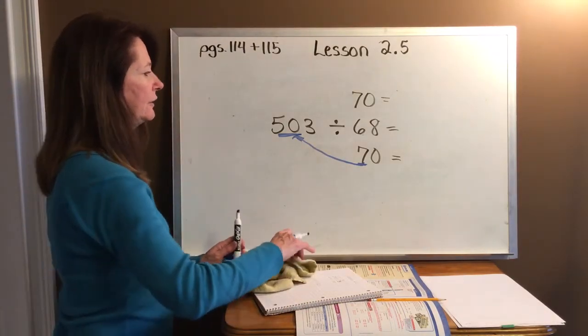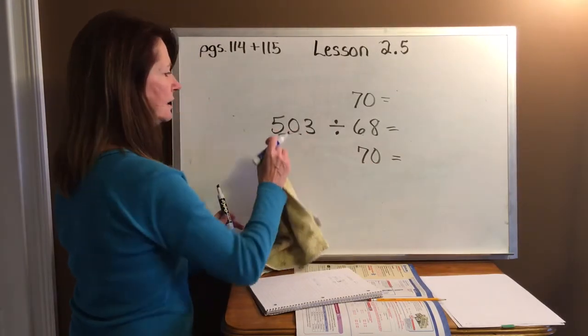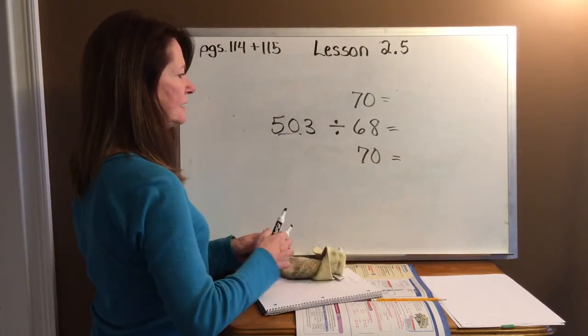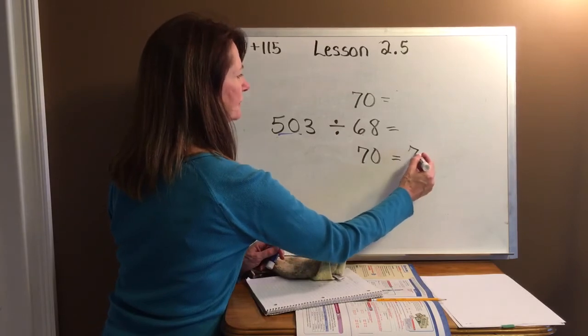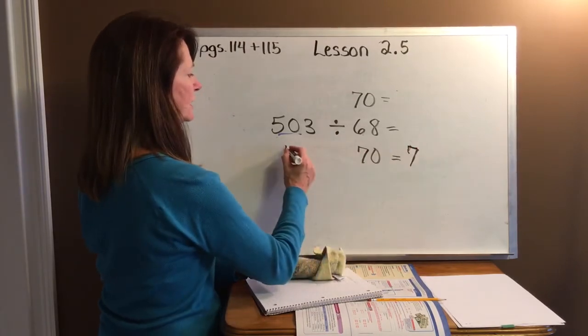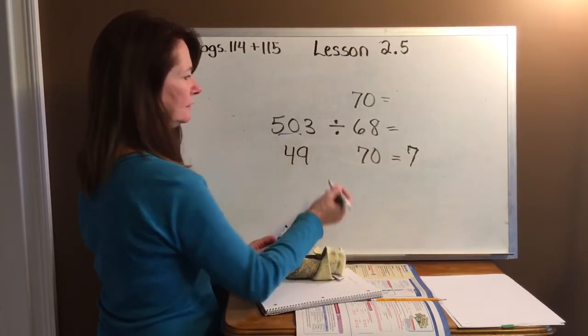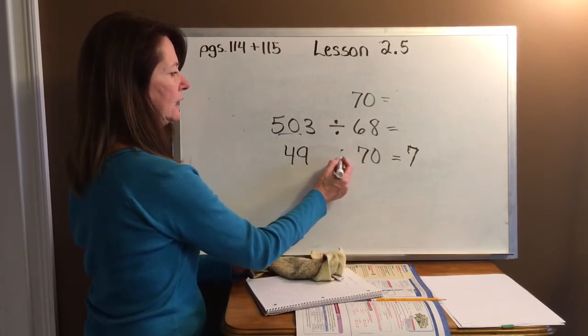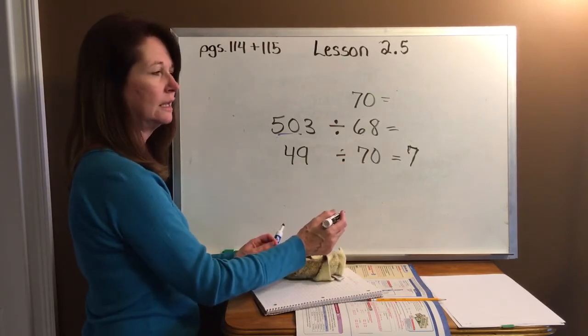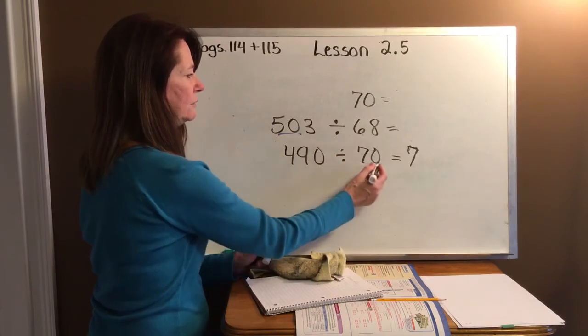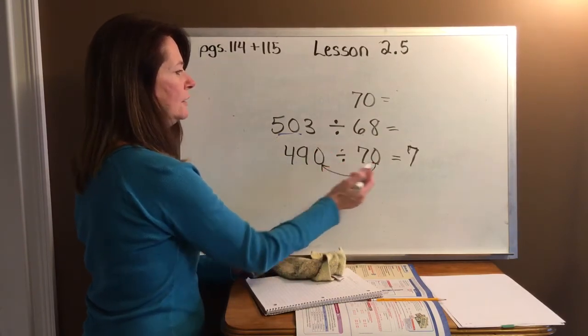So, here I go. I'm going to go ahead and get rid of this again. So, 7 times 7 is 49. And then do what? Tack on the 0. So, take that 0. Tack it on.